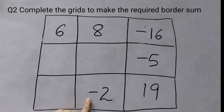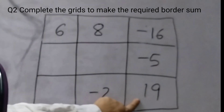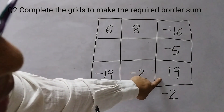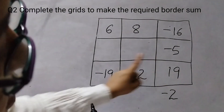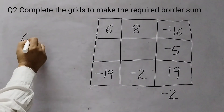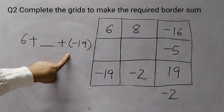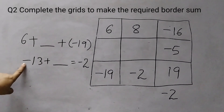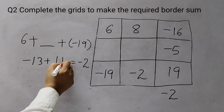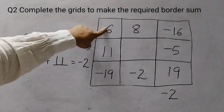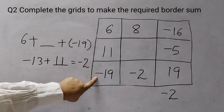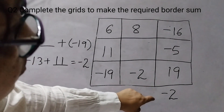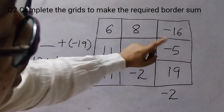In the bottom row we already have minus 2 and 19. The border sum is minus 2, so I need to eliminate 19 by adding minus 19. Minus 19 plus 19 becomes 0, and 0 plus minus 2 is minus 2. For the left column: 6 plus blank plus minus 19. First, 6 minus 19 is minus 13. To get minus 2, I add 11, since 6 plus 11 is 17 and 17 plus minus 19 is minus 2. You can verify all border sums equal minus 2.